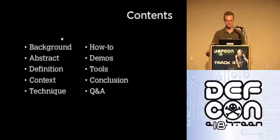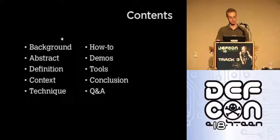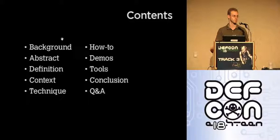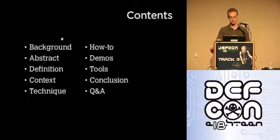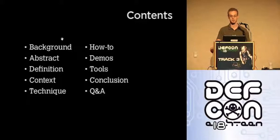A little bit of background. The contents of this are going to be a little bit of background on me, an abstract of what format strings are, how you exploit them, a definition of the way in which C functions are made vulnerable to it, context in terms of old, current, and new attacks. I'm going to show you my new techniques for exploiting them, actually go through a couple of demos, before showing you a couple of full exploits, popping root shells without doing any work. Then I'm going to show you my tools, how I do it, finally leading to a conclusion and Q&A.